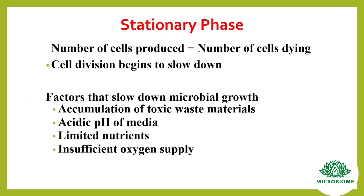Next, in the stationary phase, the number of cells produced is equal to the number of cells dying, and cell division begins to slow down. Factors that slow down microbial growth include accumulation of toxic waste materials, acidic pH of the media, limited nutrients, and insufficient oxygen supply.